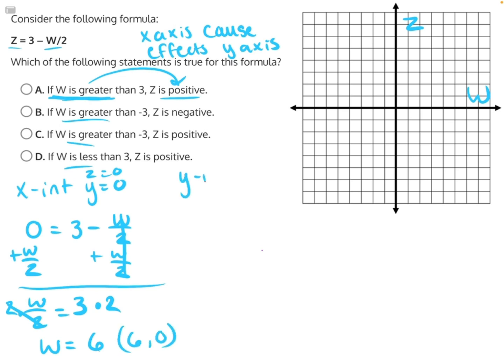Then we can find our y-intercept, which is where x equals 0, or in this case where w equals 0. Again, rewrite our function to say z = 3 - 0/2.